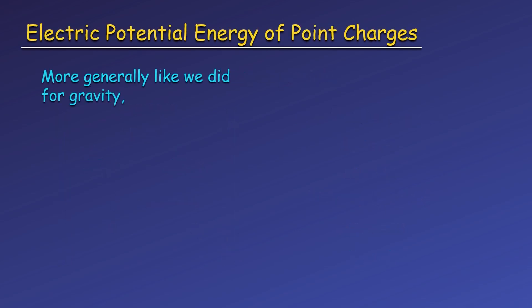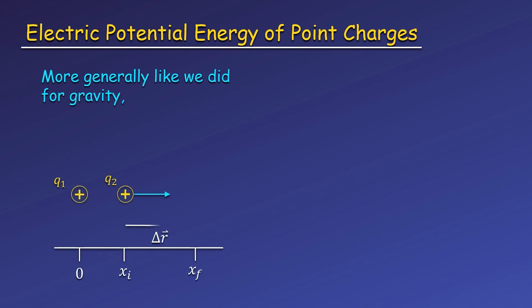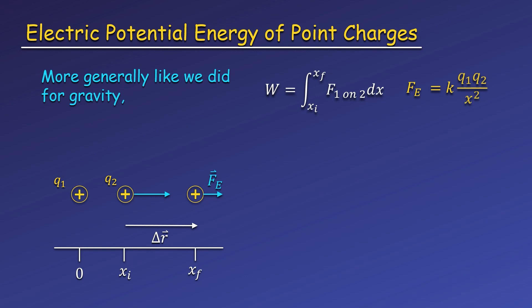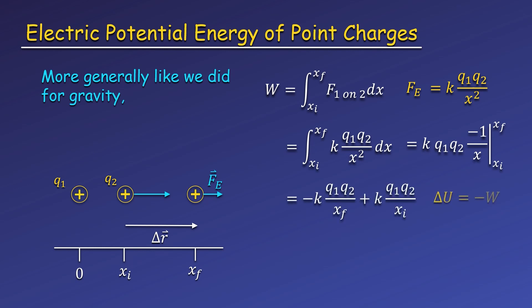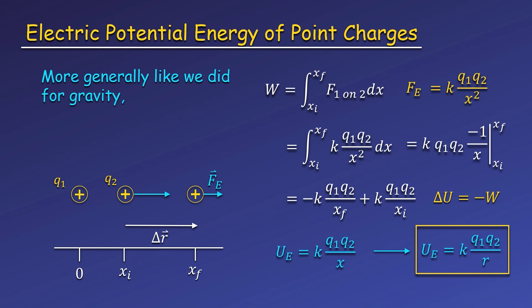Now we'll look at the potential energy of point charges in general. This will work the same as how we find the gravitational potential energy in general between any two masses. If we take two positive charges — one at the origin that we'll say is fixed, and another at some initial position — the fixed charge will exert a repulsive force on the second charge and push it away. This force is given by Coulomb's law for point charges, and since this force depends on distance, we must integrate to find the work done, but luckily this is an easy integral to solve. And when we do this, we can define the electric potential energy between two point charges to be K times Q1 times Q2 over R.